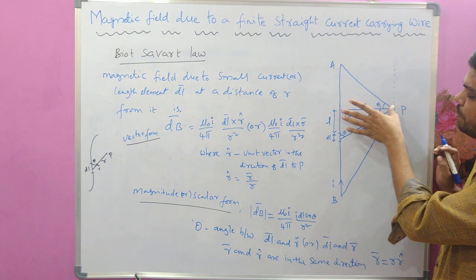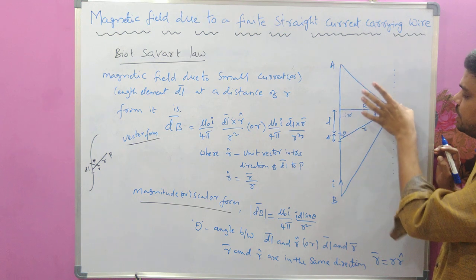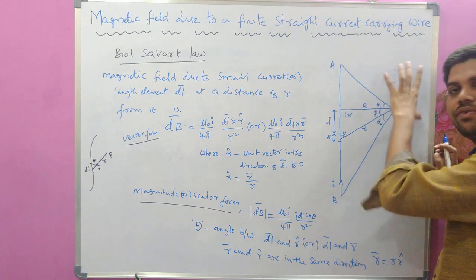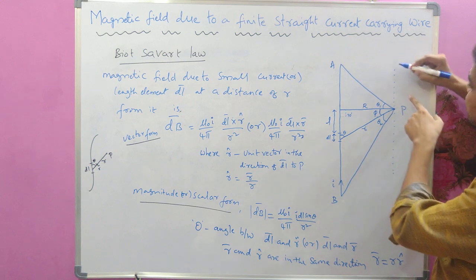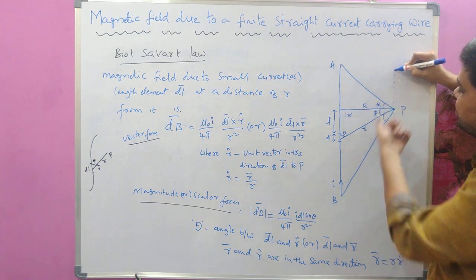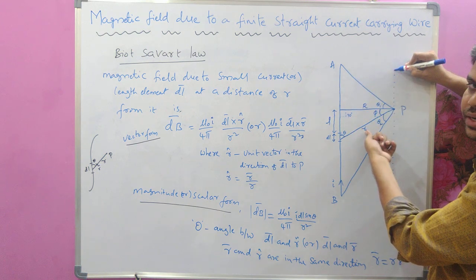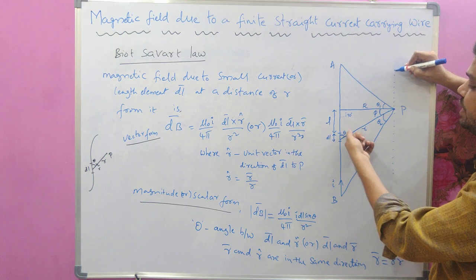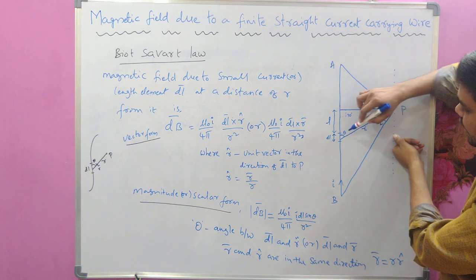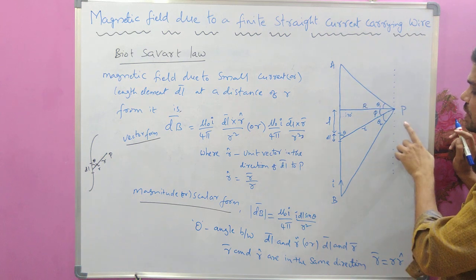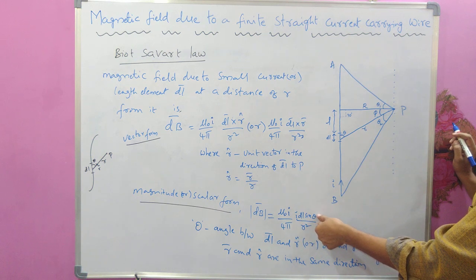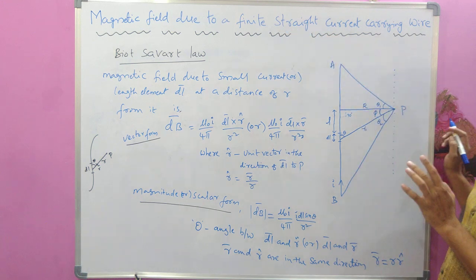Even though the perpendicular distance of a point from the wire is the same, the magnetic field value is different. If you consider different positions along the wire, the distance small r from element DL to P would be different, and the angle θ would be different for each. Since the magnitude depends on r and θ — and not just capital R — this is the key issue for a finite straight current-carrying wire.